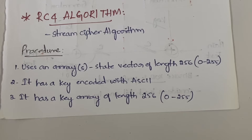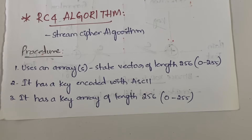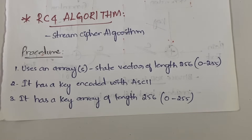Welcome back to the YouTube channel Travel Free. In today's video I'm going to explain the RC4 algorithm — the steps involved and the algorithms to follow in each step. The example problem will be covered in the next video since it has many iterations. First, RC4 is a stream cipher algorithm. Whatever we have learned so far — DES, Blowfish, IDEA — all of these are block cipher algorithms. RC4 is an example of a stream cipher algorithm.